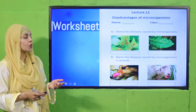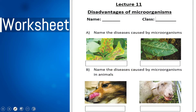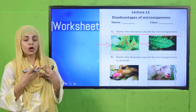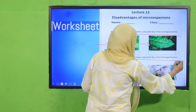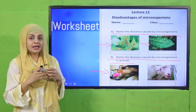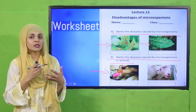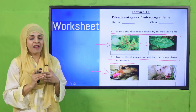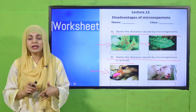I hope you have finished. Now we will move forward towards the worksheet on disadvantages of microorganisms. Write down your name and class — you can download this worksheet from the description box below this video, or get it in print form from your teacher. Name the diseases caused by microorganisms in the leaves shown, write their cause and which microbe causes it. Also name the diseases in animals — ringworm and blue tongue — and identify which pathogen causes each. Pause the video, complete the worksheet, and submit it to your teacher.